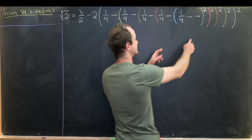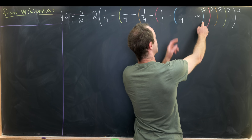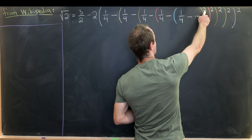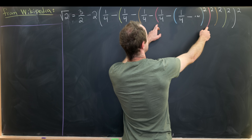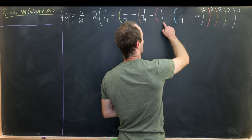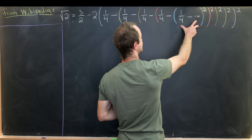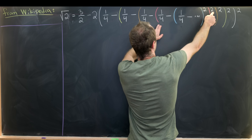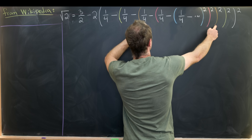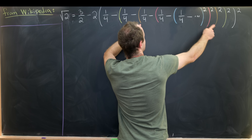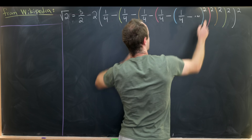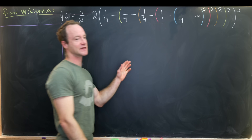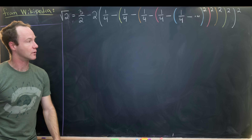Inside of that infinite nesting, all of that is squared. And then just outside of that, you have 1 quarter minus that bit, all of that squared. Just outside of that, you have 1 quarter minus all of that, all of that squared, and so on and so forth. I've color-coded the parentheses so you can see what's going on.